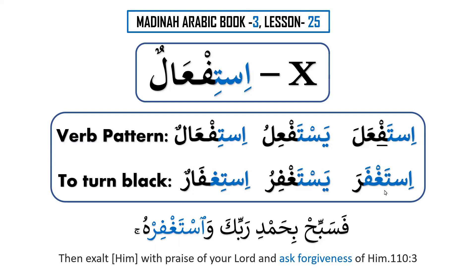In Form 8, ifta'ala, after 'ta,' the next letter will always be mutaharrik. For example, istama'a — which form is this? It is Form 8. Why? Because after 'ta,' the meem is mutaharrik. But in Form 10, it will always be sakin. That is the easiest way to figure out the difference between Form 8 and Form 10.